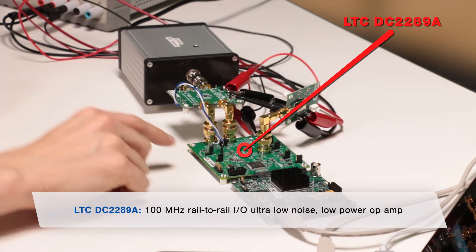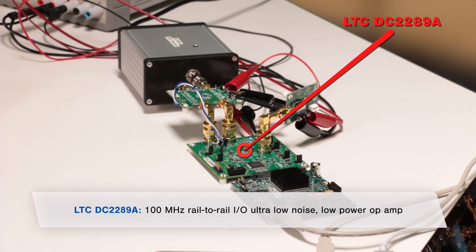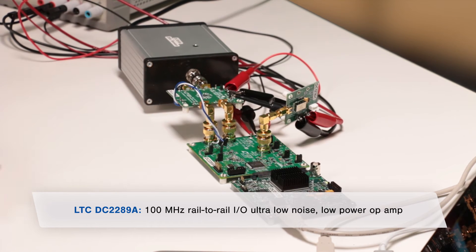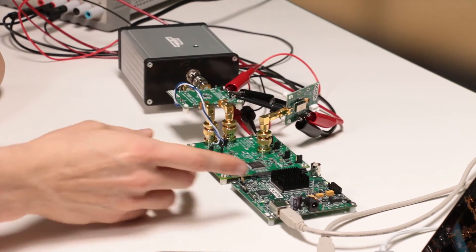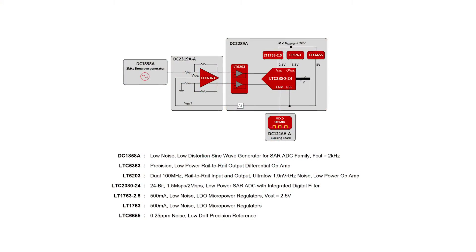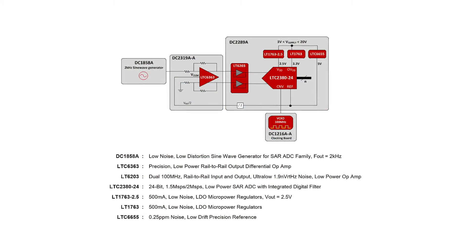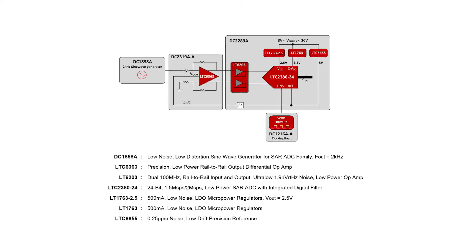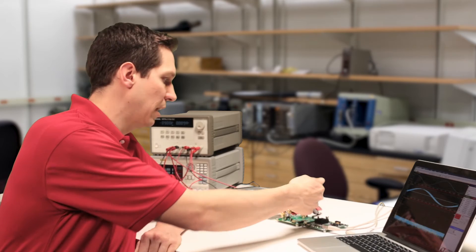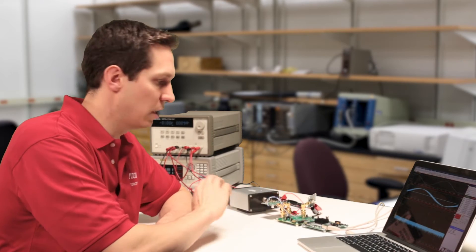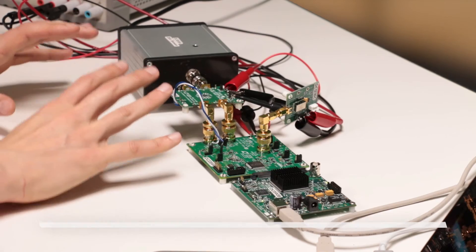On the DC2289A, you get an optional first order low pass filter. This also includes a 100 megahertz rail to rail input and output, ultra low noise, low power op amp, and it acts as an input buffer to the ADC. And so all of this currently is set up for the AC sampling. However, it's actually fairly simple to switch it over to DC sampling. We'll switch it over to DC sampling and give you a demonstration. It's just a quick jumper change and then you're good to go.